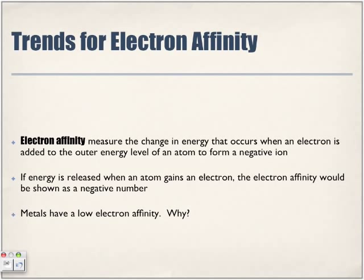Metals have a low electron affinity. Because if we break down what affinity means, it means wanting, or even liking. Metals do not like, do not care for their valence electron. They're more likely to want to give it up because they don't have a strong enough pull with the nucleus on that valence electron.